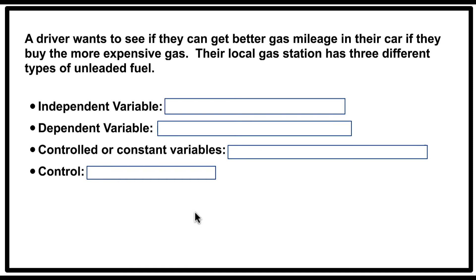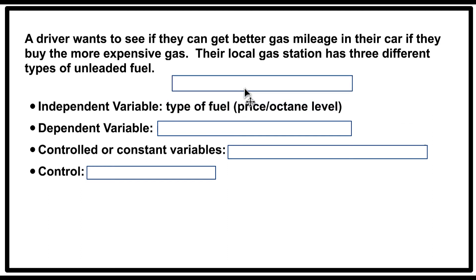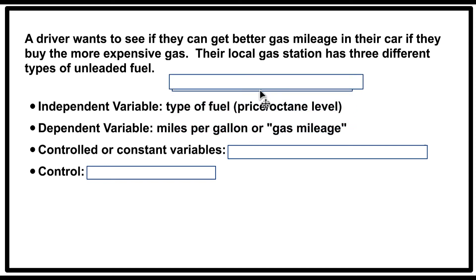Here's the third experiment. A driver wants to see if they can get better gas mileage if they buy the more expensive gas. Their local gas station has three different types of unleaded fuel. The independent variable — what the scientist is comparing — is the type of fuel, which is typically the octane level; that's what you're paying for. The dependent variable is what they would be measuring after putting different types of fuel in the car: essentially how far they can go on a gallon — the gas mileage, or miles per gallon.